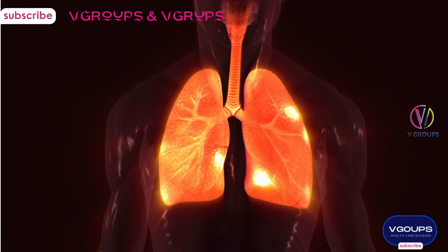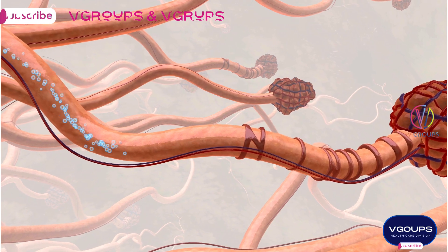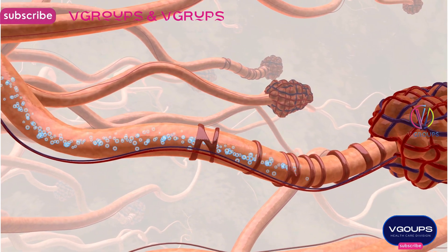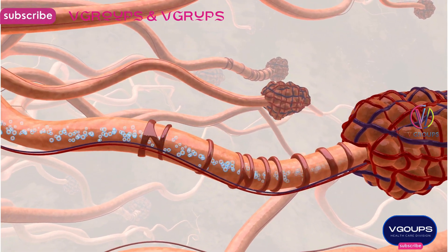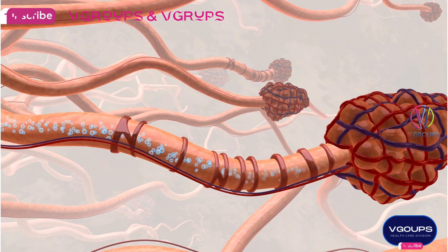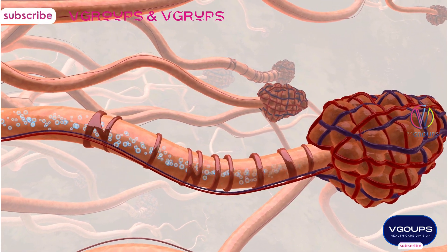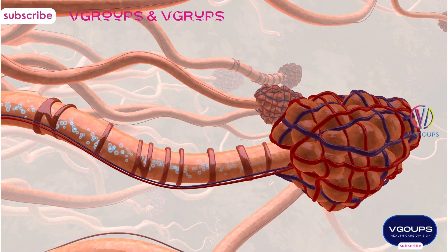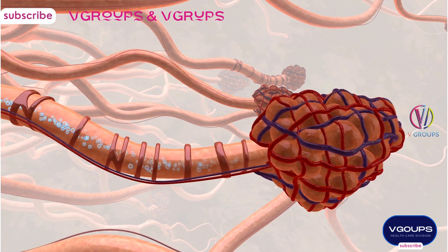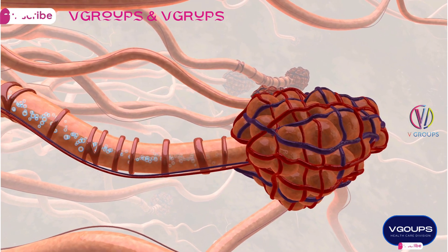Types of lungs based on anatomy: Multi-lobed lungs are found in mammals like humans. The right lung is divided into three lobes, while the left lung has two lobes. Bi-lobed lungs, based on lobes, are found in birds, consisting of two large lobes.